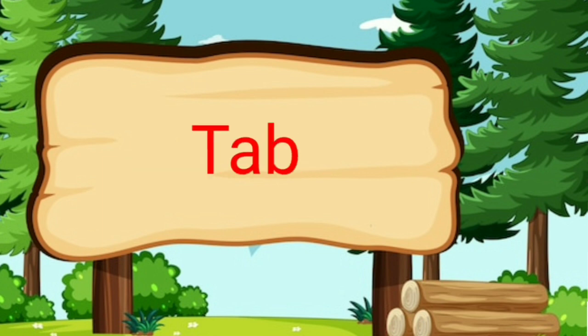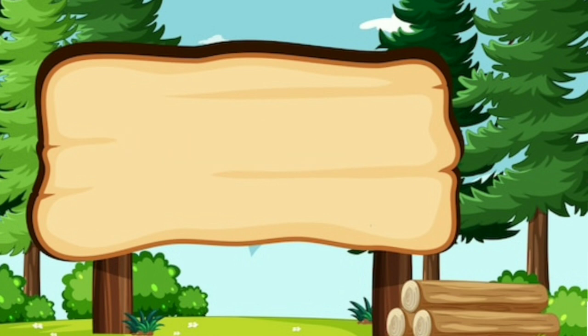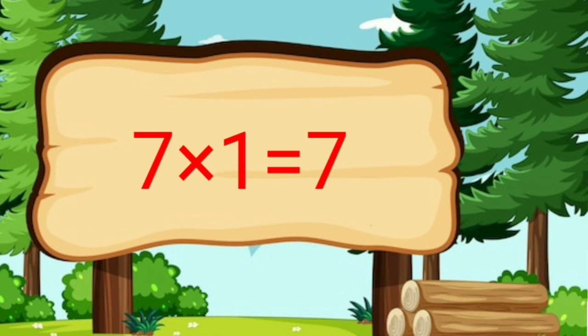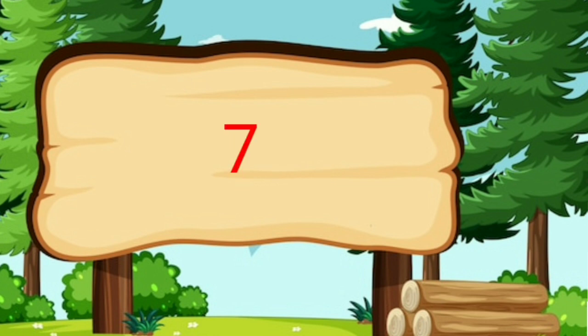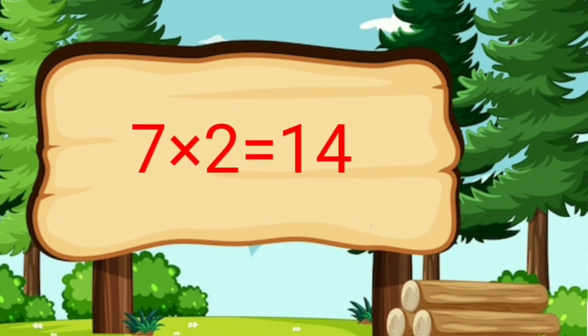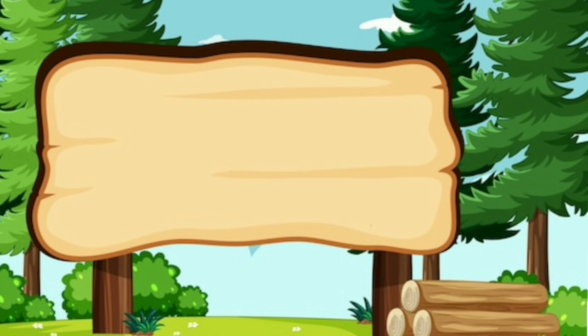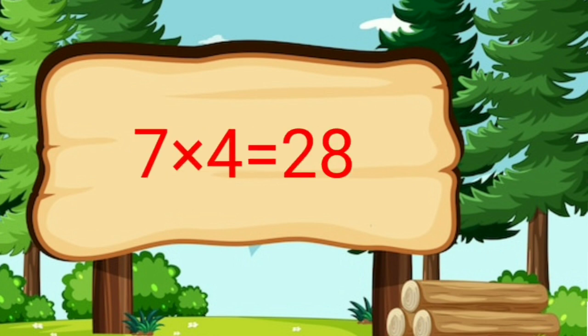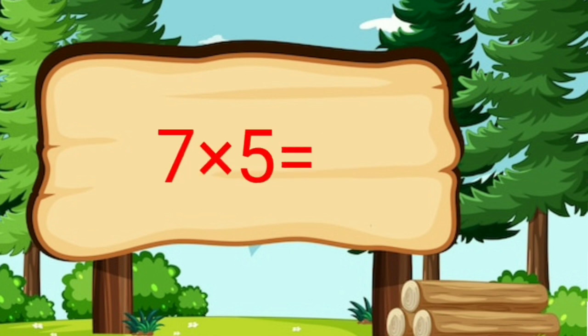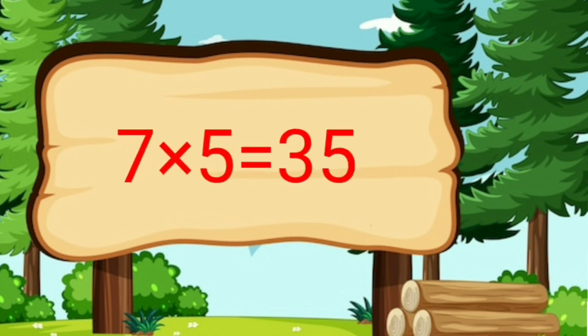Table of 7. 7 ones are 7. 7 twos are 14. 7 threes are 21. 7 fours are 28. 7 fives are 35.